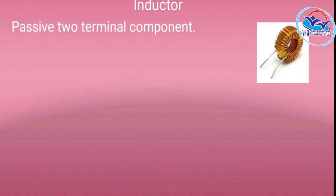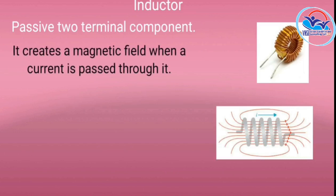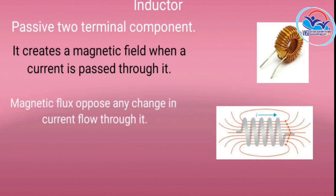A capacitor is a passive two-terminal component. An inductor uses a coil. When current is passed through the coil, it creates a magnetic field. Due to that magnetic field, a magnetic flux is formed, and this magnetic flux opposes any change in current flow through the coil.